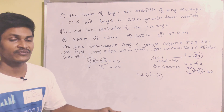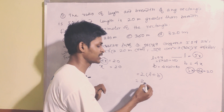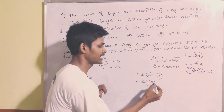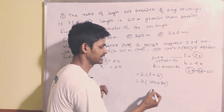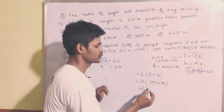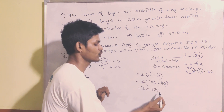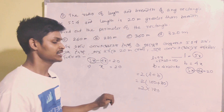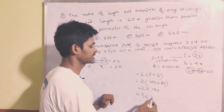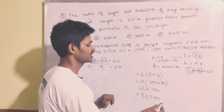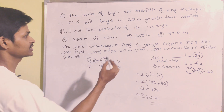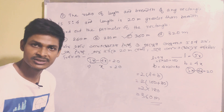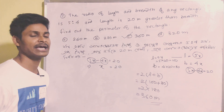The perimeter of the rectangle is 2 into (length plus breadth) equals 2 into (100 plus 80) equals 2 into 180 equals 360 meters. So 360 meters is our answer, option C.